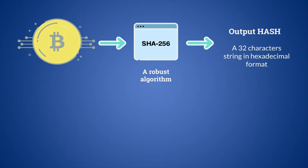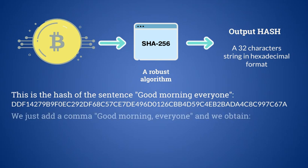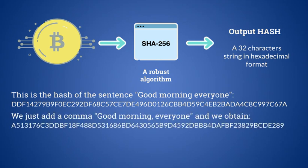Let's make an example using the SHA-256 algorithm. What you see is the hash of the sentence "good morning everyone." Let's just add a comma — "good morning everyone," — and this is the completely different hash we get. This aspect of the cryptographic hash allows us to identify why the transactions inserted in the blockchain are unchangeable.